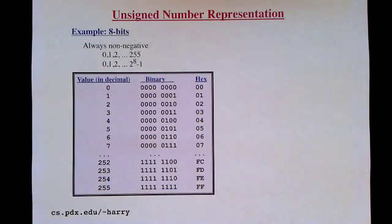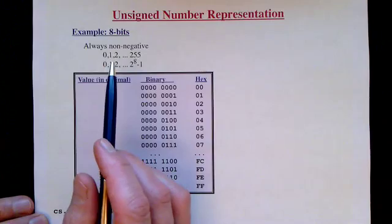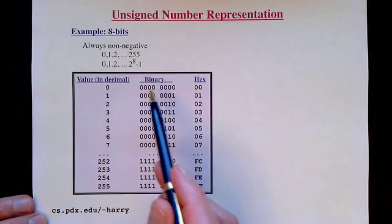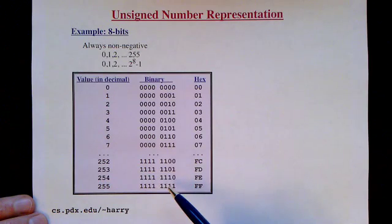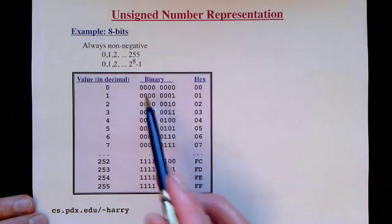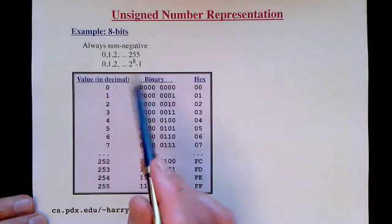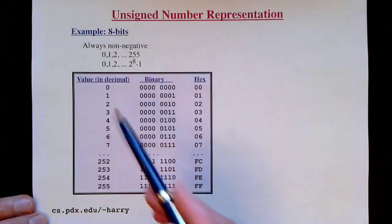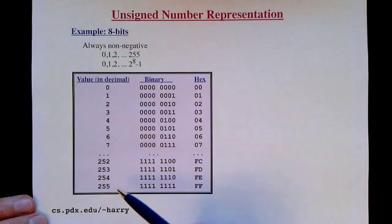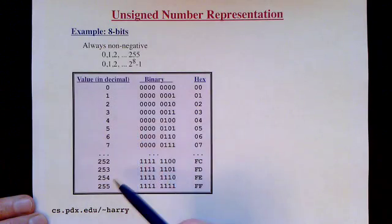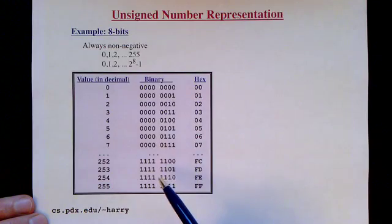We've gotten a pretty good start with binary numbers already. Let's look at just eight bits and talk about unsigned numbers. We've shown how we can have 256 different possible bit combinations in one byte — eight bits, each either zero or one, giving us 256 different values. With unsigned number representation, we associate each bit pattern with a number between zero and 255.